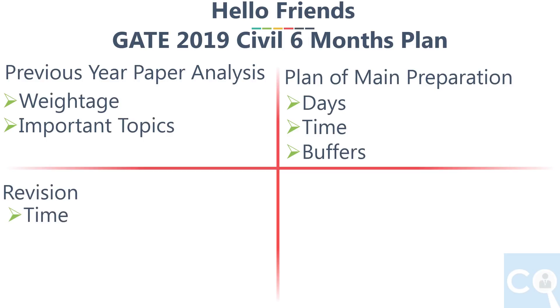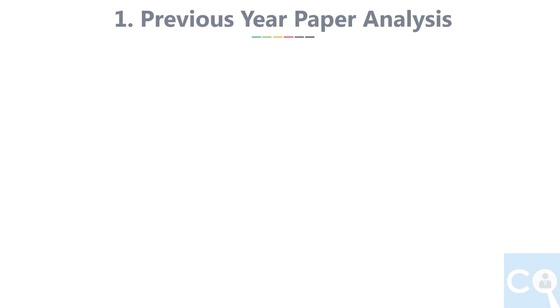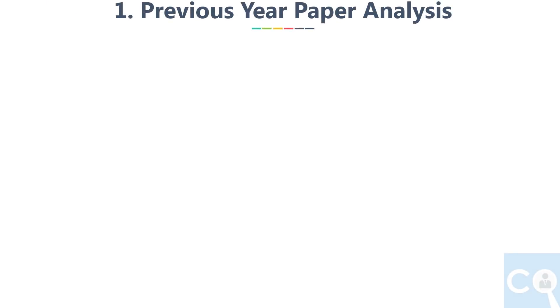Section 3 is revision — how much time to give for revision, the formula for deciding the sequence of subjects in revision, and full-length tests. Section 4 is resources. So let's start with point 1: previous year paper analysis.